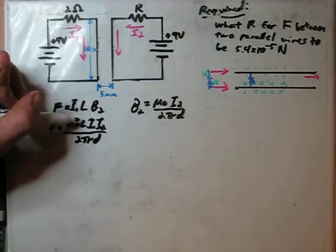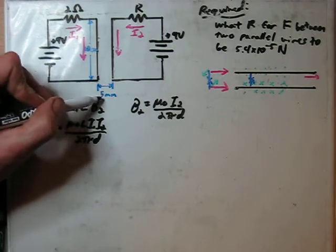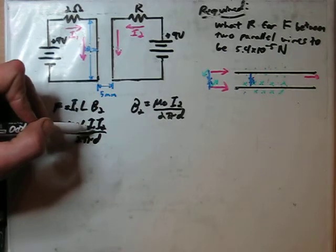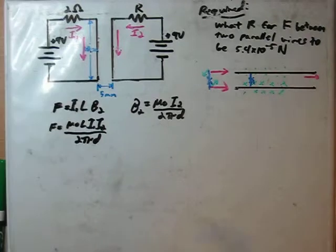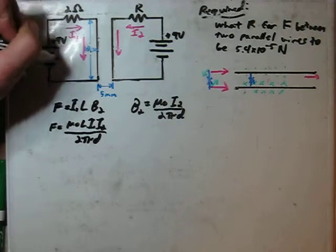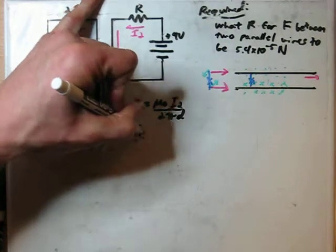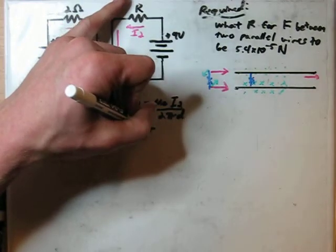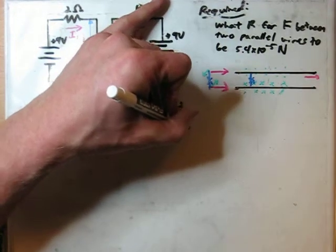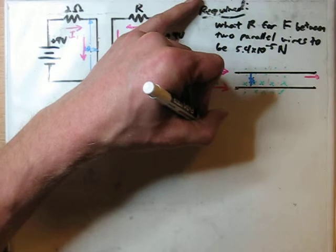Now we can start looking at what we know. We know the length, we know mu naught, that's just constant. We know our distance D is going to be the distance between the wires that's labeled at 5 millimeters. The length was 10 centimeters. And we know I1, at least we can determine it, using Ohm's law. We have a 9 volt battery and a 2 ohm resistor. So we can just determine I1 as voltage over resistance, which equals 9 volts over 2 ohms, which is just 4.5 amps.